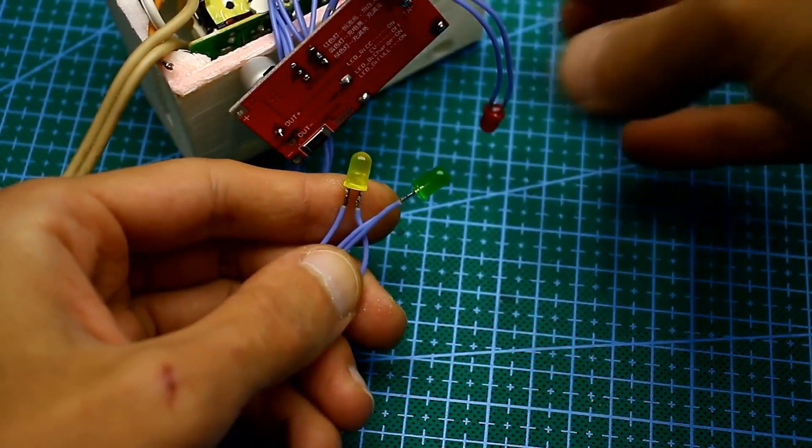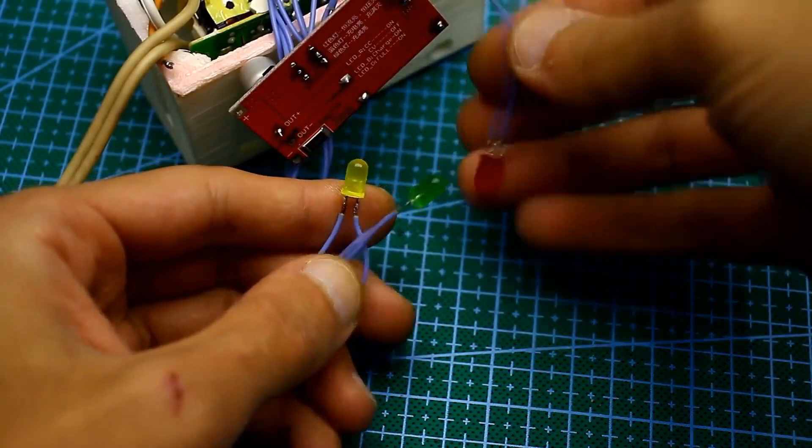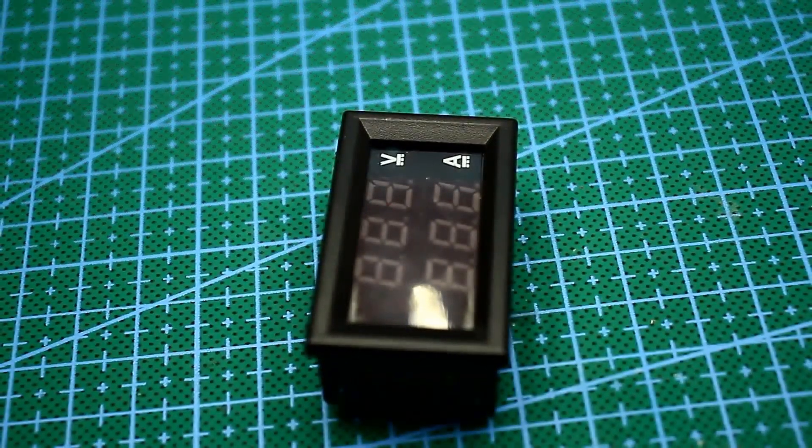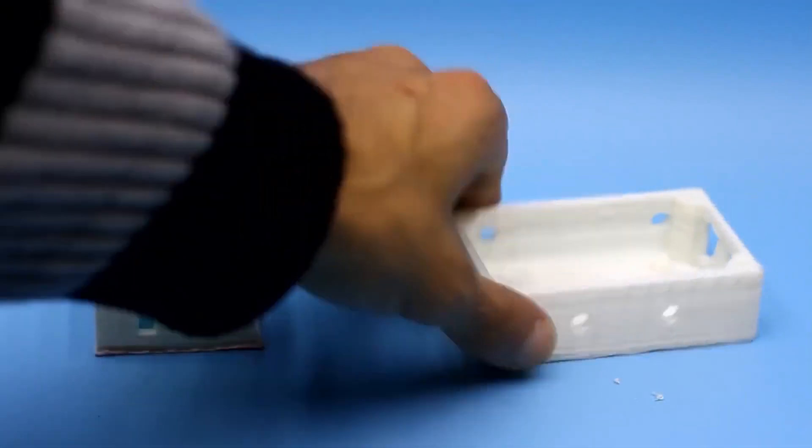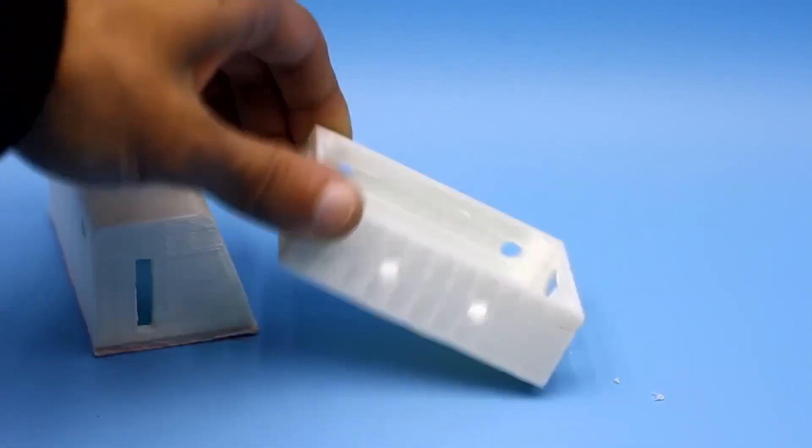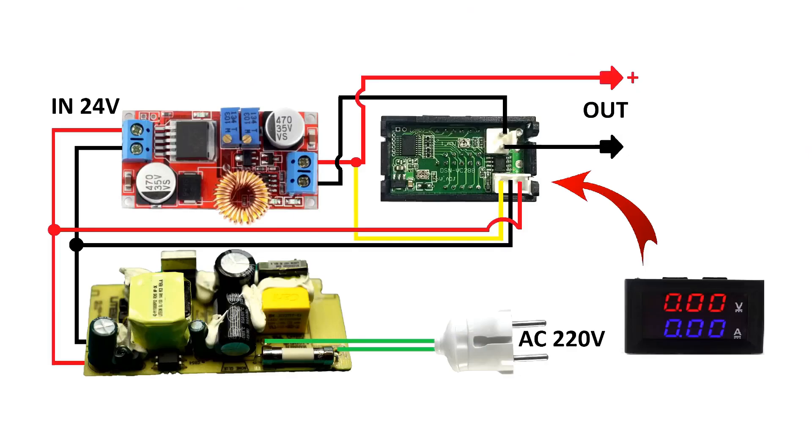The power supply has LED indicators for operating modes and a digital volt amp meter. The case was printed on a 3D printer. You will find the link to the model for printing in the description. The internals consist of two units. These are a network switching, step-down power supply, and a stabilizer board based on the XL4015 chip.